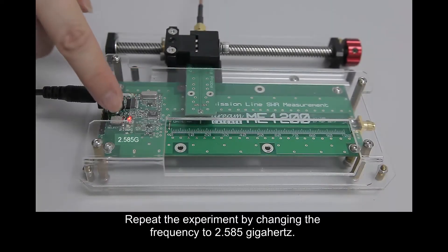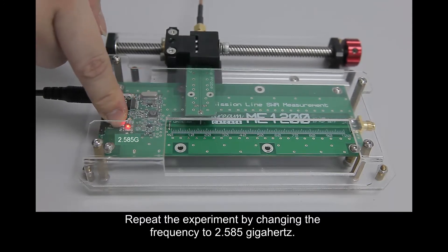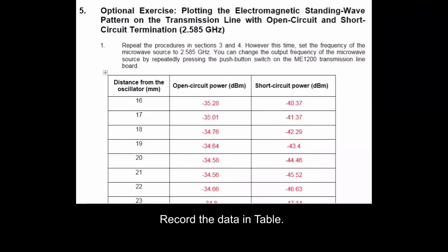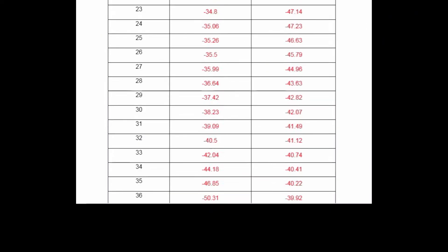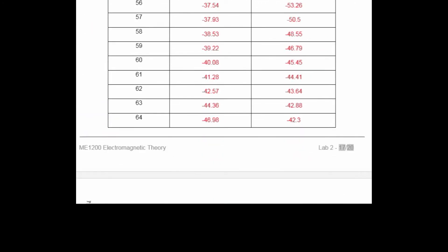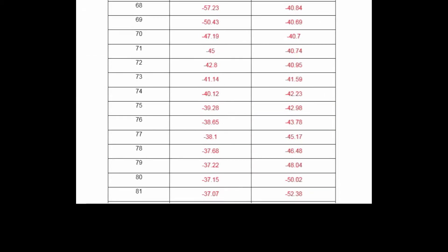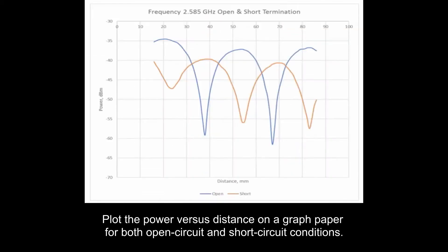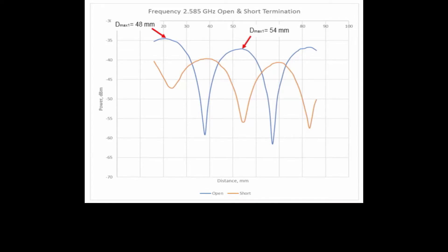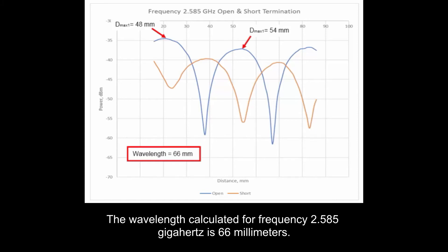Repeat the experiment by changing the frequency to 2.585 GHz. Record the data in table. Plot the power versus distance on a graph paper for both open circuit and short circuit conditions. The wavelength calculated for frequency 2.585 GHz is 66 mm.